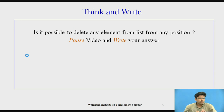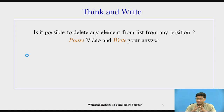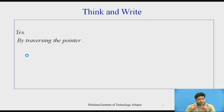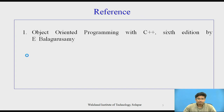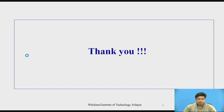Think and write: Is it possible to delete any element from the list at any position? Currently we are accessing the element from a specific position and retrieving it — can we delete that particular specific element from the list? Yes, that is possible. We can perform this operation by simply traversing the pointer to that position and deleting that particular element, so we can write our own delete method as well. Hope everyone is getting this concept. Reference: Object-Oriented Programming with C++, 6th edition by E. Balagurusamy. Thank you.